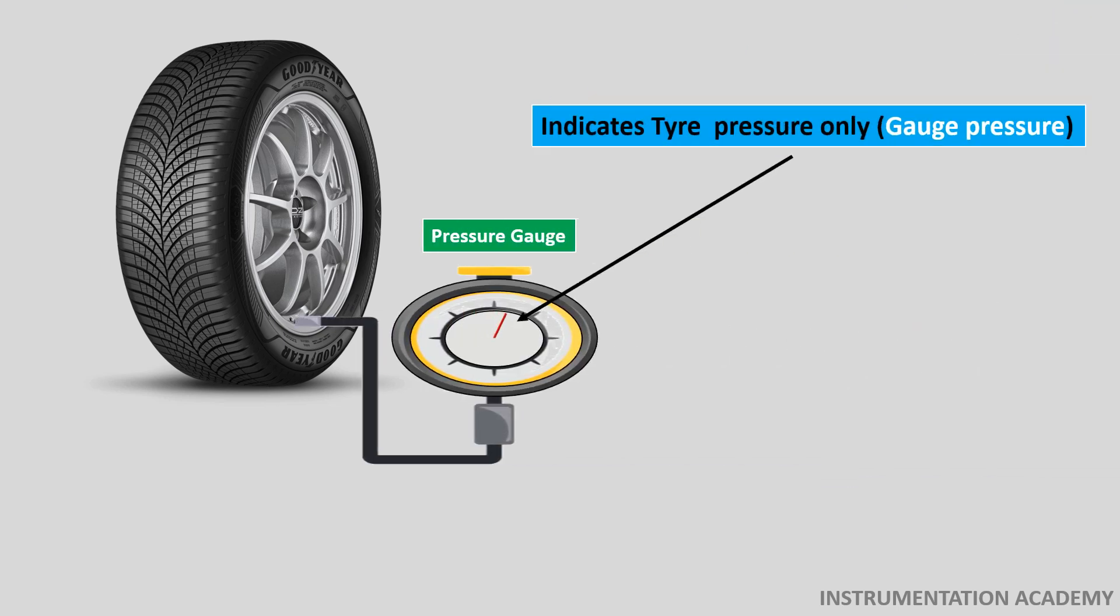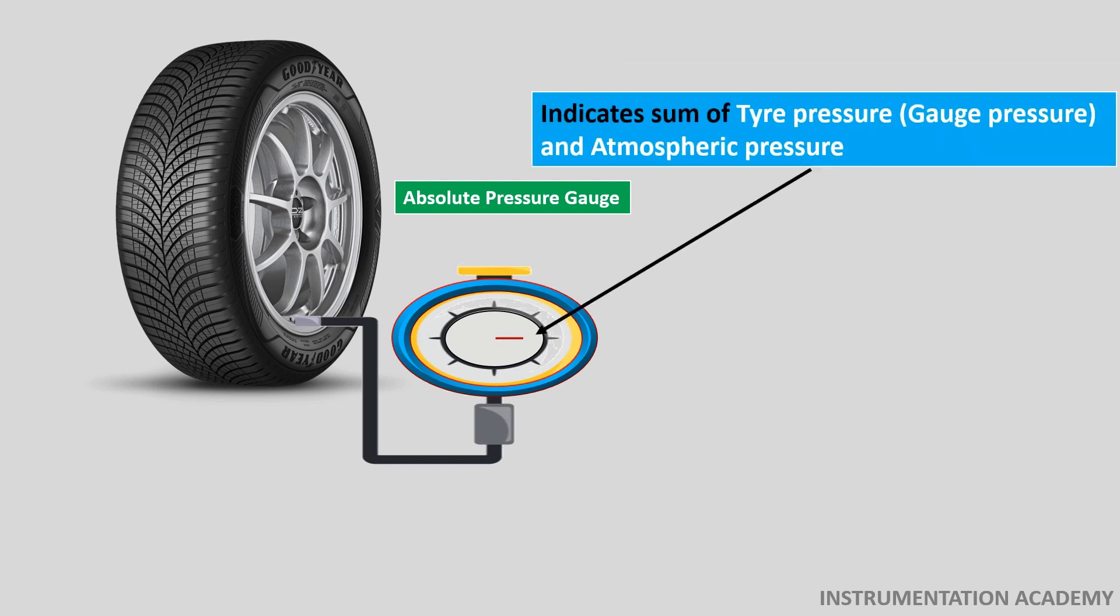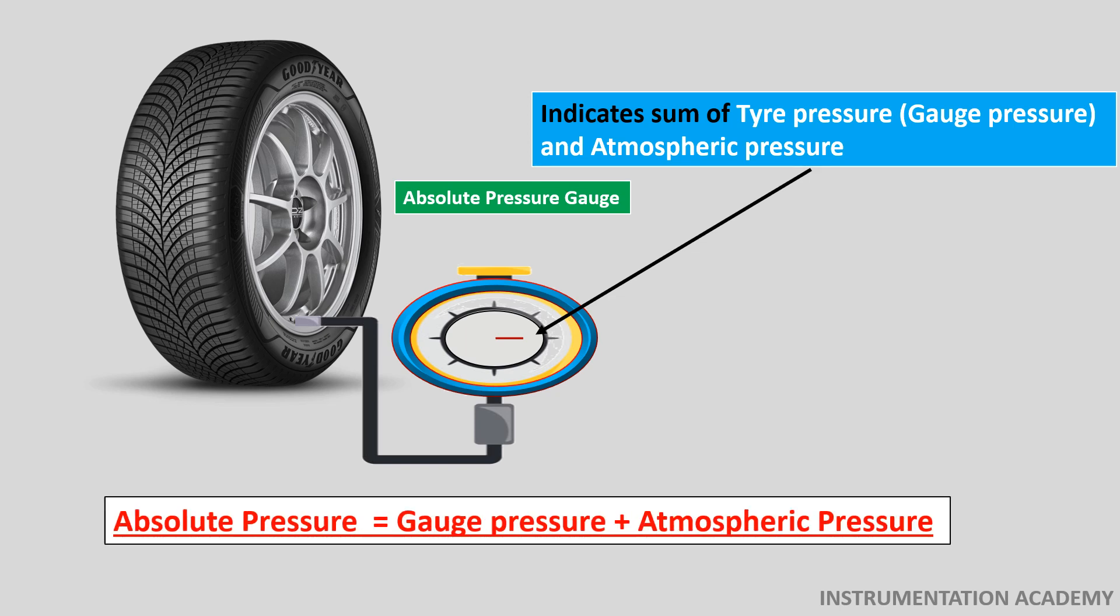Consider that we need to measure the pressure of air in a tire. If we use a pressure gauge, the gauge will indicate the pressure of air inside the tire only, which is the gauge pressure. If we use an absolute pressure gauge, then this gauge will indicate the sum of pressure inside the tire and the atmospheric pressure. That is, absolute pressure is equal to gauge pressure plus atmospheric pressure.